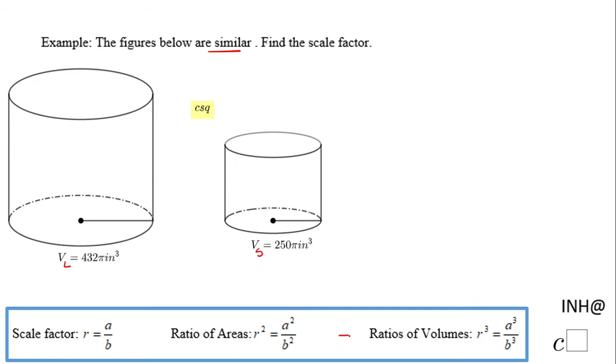I'm going to look at this ratio of the volumes because the volumes are given here. I'm going to write this as r³ and make it from large to small. In other words, the volume of the large over the volume of the small figure, and this will be 432π